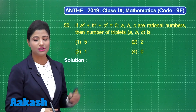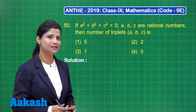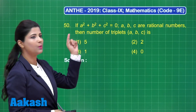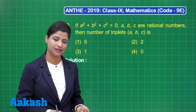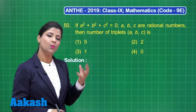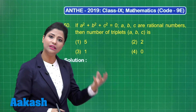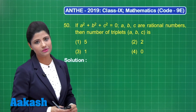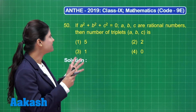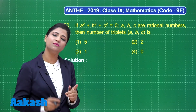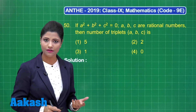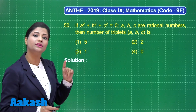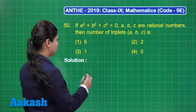When you observe this given expression — a squared plus b squared plus c squared equal to 0 — we are talking about squares, which are non-negative quantities. When we take the sum of three non-negative quantities and the sum total is equal to 0, their sum can only be 0 when all three of them are equal to 0.